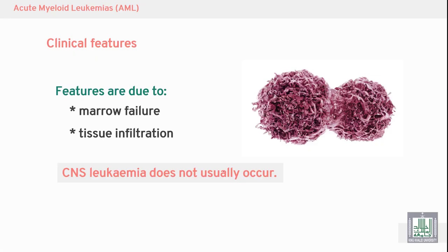Clinically, acute myeloid leukemia is characterized by the same picture as acute lymphoblastic leukemia: marrow failure due to malignant cells. The malignant cells leave the bone marrow, go to the blood, and then from the blood to the organs, causing lymphadenopathy.